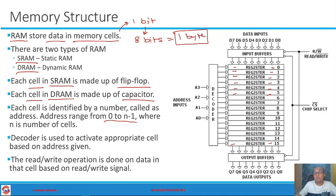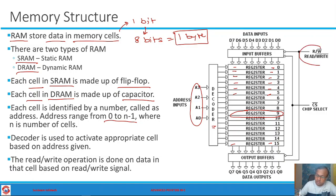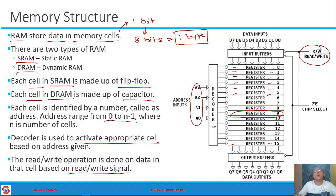The address to be read from or written to is given to the RAM by the CPU. This address is given to a decoder, and the decoder activates the appropriate cell. Whether it is a read operation or a write operation is governed by a special signal called the read/write signal. So the CPU sends the address to the RAM, RAM internally uses a decoder circuit to activate the appropriate cell, and based on the read/write signal the operation is performed on that location.